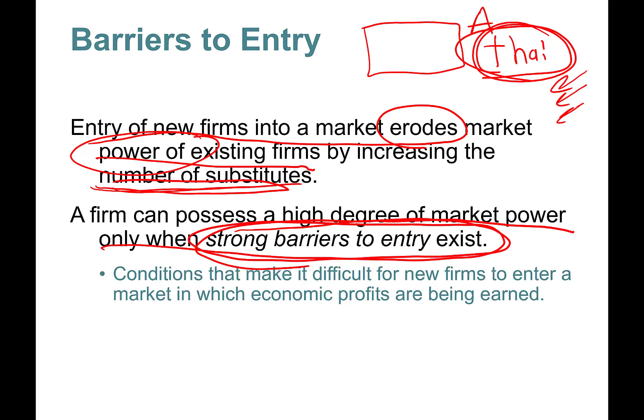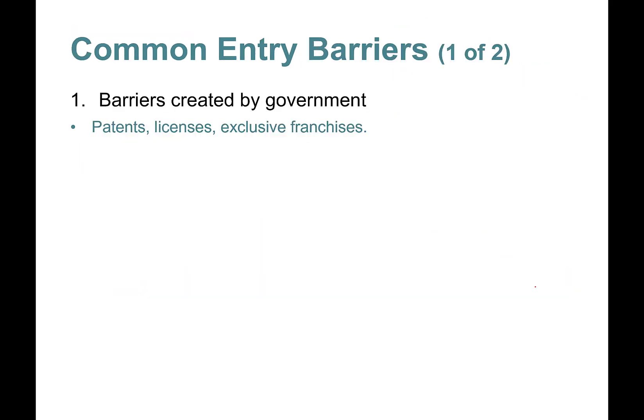Barriers to entry are conditions that make it difficult for new firms to enter a market in which economic profits are being earned. The first common barriers are those created by government: patents, licenses, exclusive franchises, and copyrights.